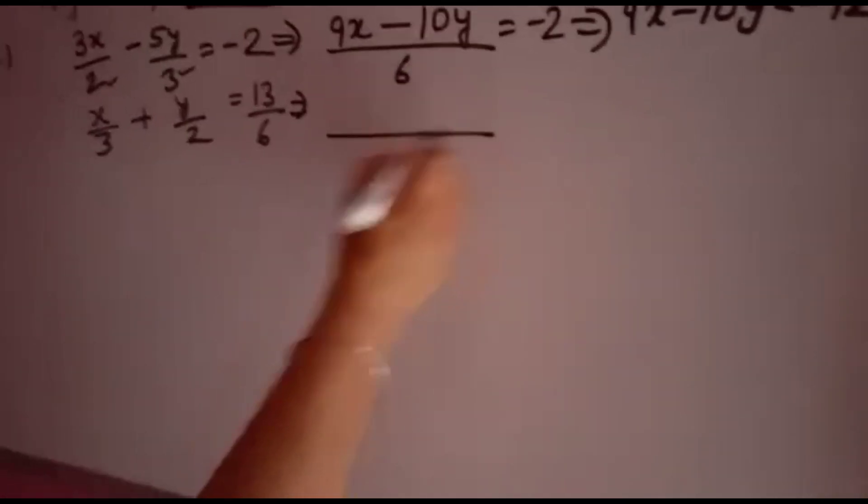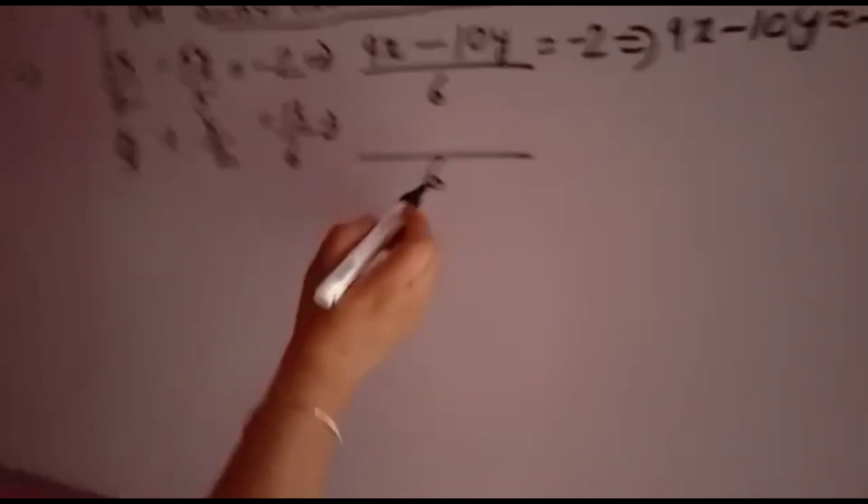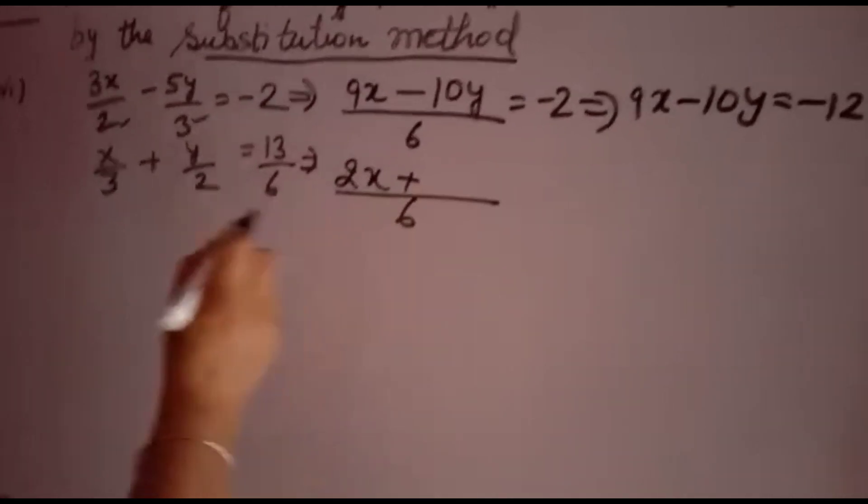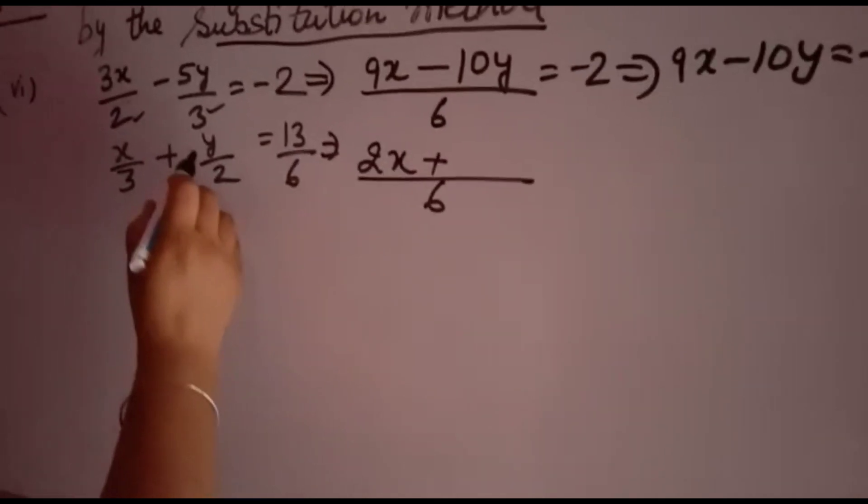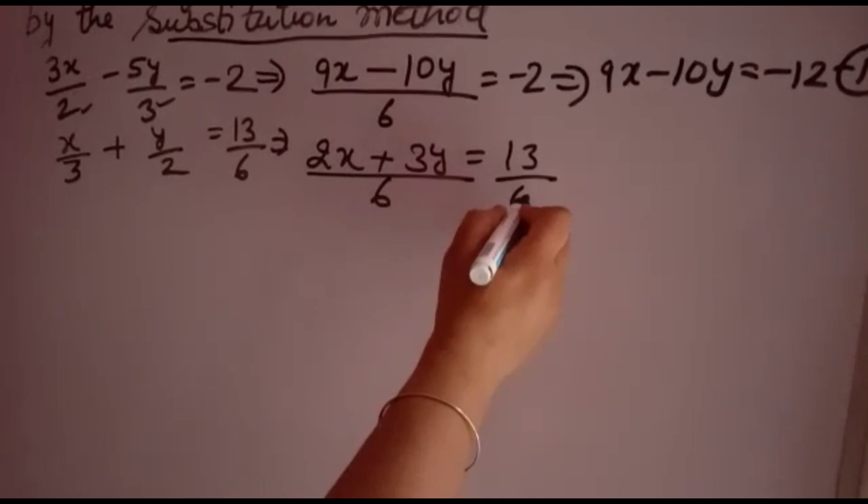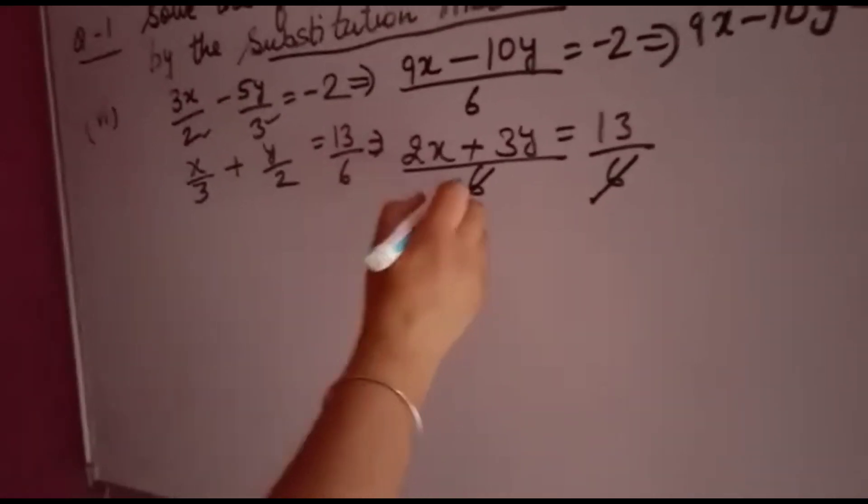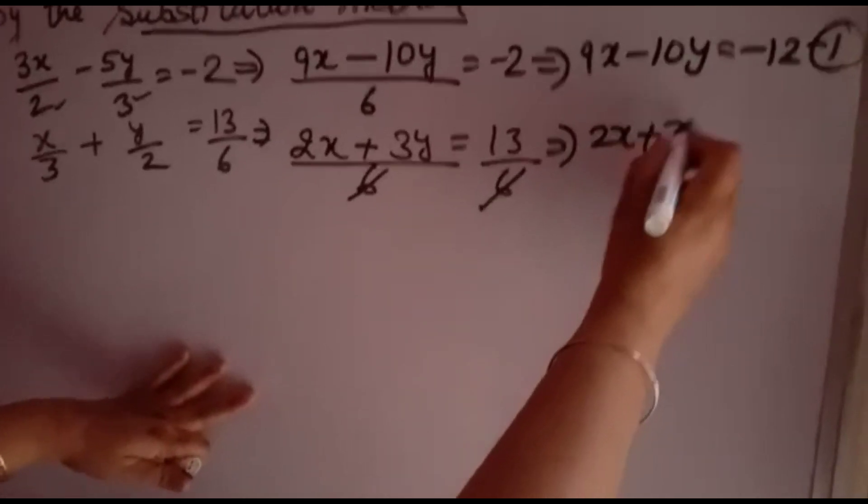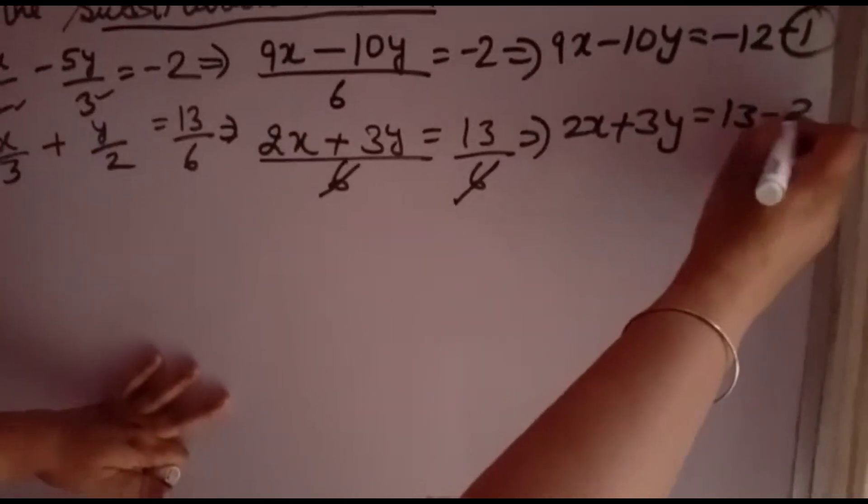Now second equation, similarly LCM of 3 and 2 is 6. 6 divided by 3 is 2, 2 into x is 2x plus 6 divided by 2 is 3, 3 into y is 3y equal to 13 over 6. Here also denominator 6, you can cancel. You will get 2x plus 3y is equal to 13. This is second equation.